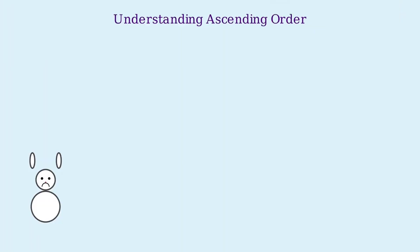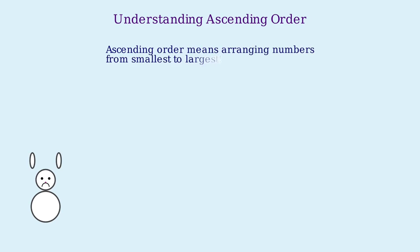Ascending order with our friend bunny. Ascending order means arranging numbers from smallest to largest. It's like climbing up a number ladder.